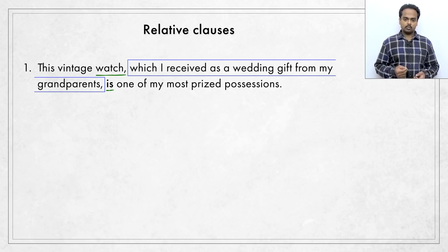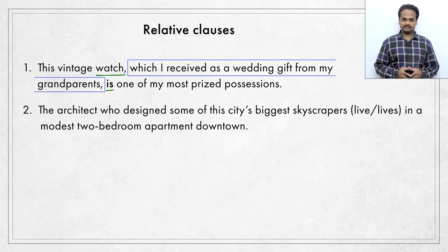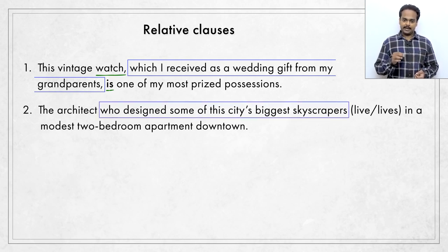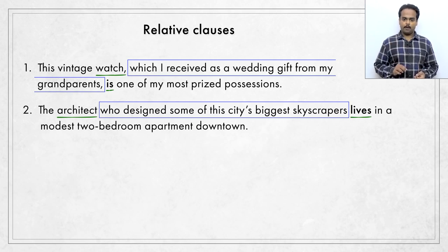Relative clauses usually start with words like who, which, that, where, or when. These words are called relative pronouns. Here's another example. The architect who designed some of the city's biggest skyscrapers live or lives in a modest two-bedroom apartment downtown. Modest means simple. The first thing that you should notice is the word who, so you know that we have a relative clause. Who designed some of the city's biggest skyscrapers is the relative clause. It tells us something about the architect, so architect is the subject here. Skyscrapers is not the subject. Architect is a singular noun, so the architect who designed some of the city's biggest skyscrapers lives in a modest two-bedroom apartment downtown.